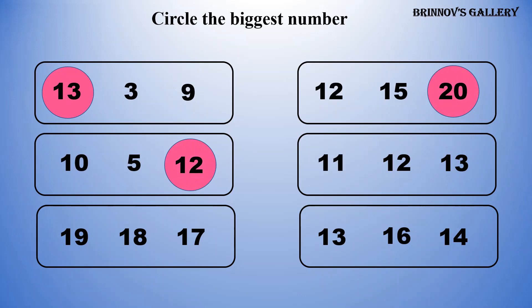11, 12, 13 — 13 is the biggest number amongst all the others. 19, 18, 17 — 19 is the biggest number amongst all the others. 13, 16, 14 — 16 is the biggest number amongst all the others.